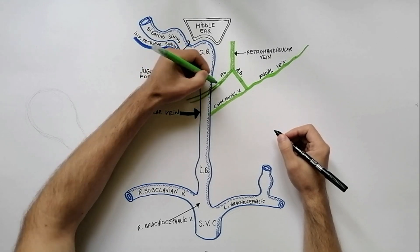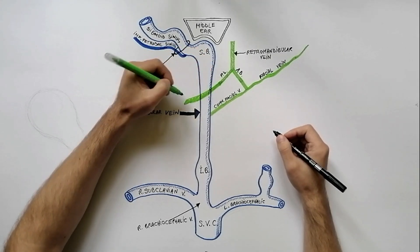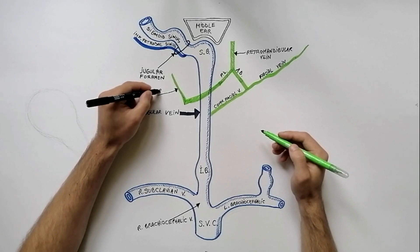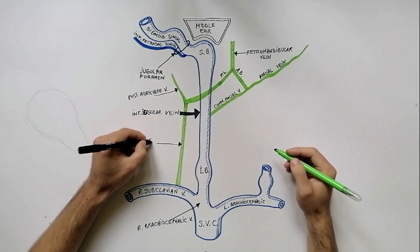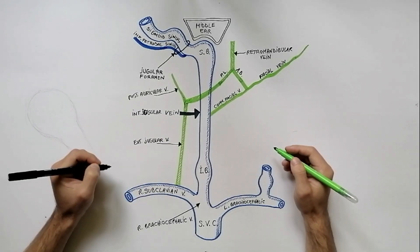The posterior division of retromandibular vein joins the posterior auricular vein to form the external jugular vein which goes downwards to end in the subclavian vein.